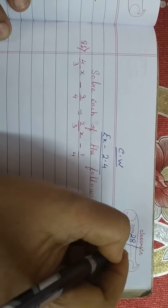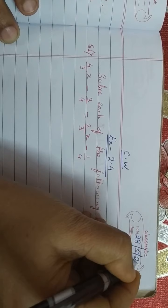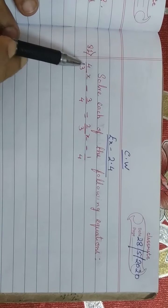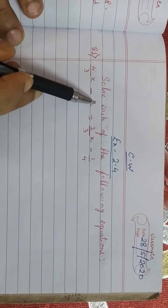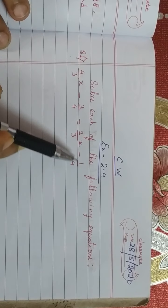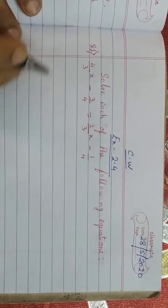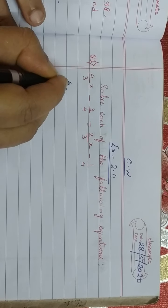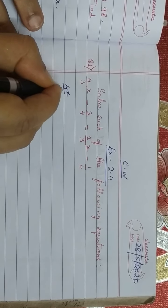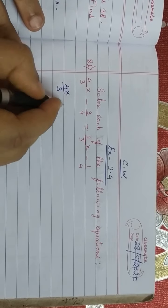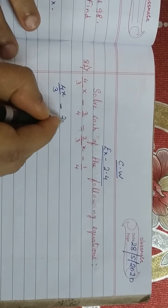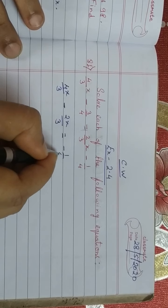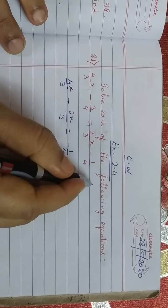Today is 28 May 2020. Question number 1: 4/3x minus 3/4 equal to 2/3x minus 1/4. First, move all the x terms to one side: 4/3x minus 2/3x minus 3/4 moves to the right side.